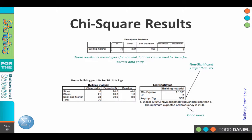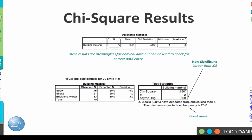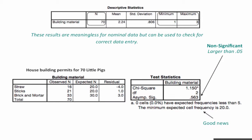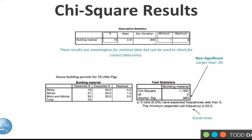Again, the descriptive statistics tell us some useful information for data checking but not so much for interpretation. We have 70 building permits, minimum and maximum are 1 and 3 — good. The mean and standard deviation are still meaningless. But as we look at the building material table, we see the expected values are different than in our previous example: they are now 20, 20, and 30 — the values we entered. The residuals are still O minus E. In the chi-square box, the chi-square is 1.15, the significance is 0.563, and that is greater than 0.05. Still good news with our expected frequencies being greater than 5, so we know that this test was not statistically significant.